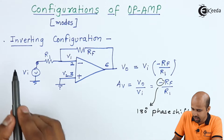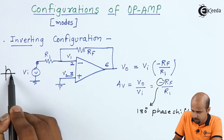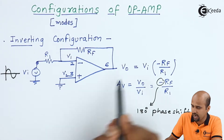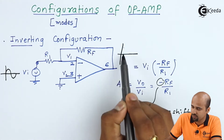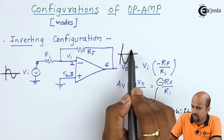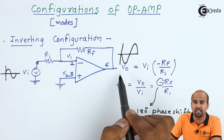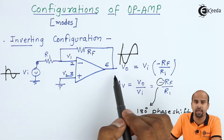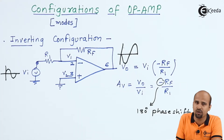This minus sign indicates a 180-degree phase shift. If the input has a positive half cycle first, then at the output side we will get a negative half cycle first with amplified magnitude, followed by the positive half cycle. This is the same as the CS configuration in FET and the CE configuration in BJT.